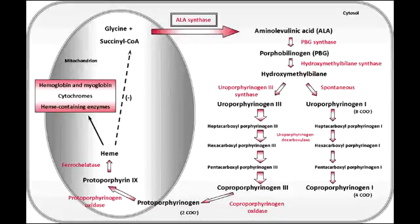Name all the substrates that would accumulate if porphobilinogen deaminase is defective. This would lead to the accumulation of porphobilinogen, delta-aminolevulinic acid, and uroporphyrin, which would be seen in the urine.